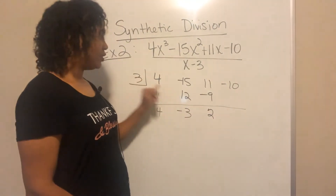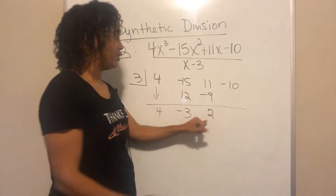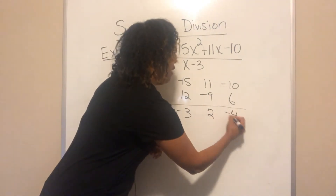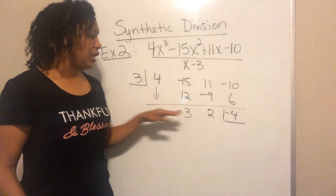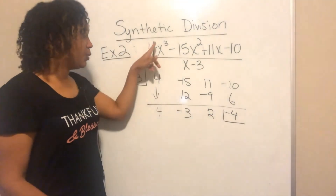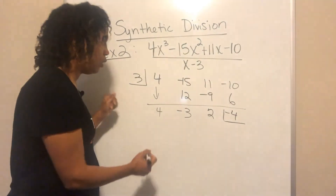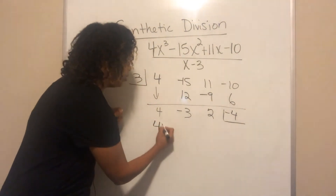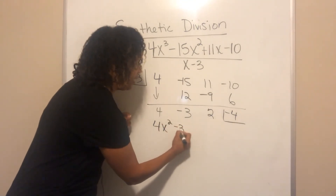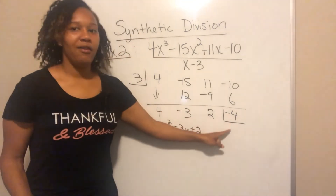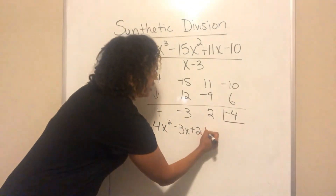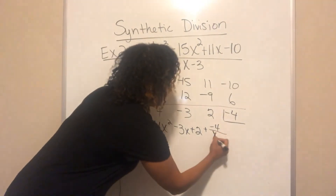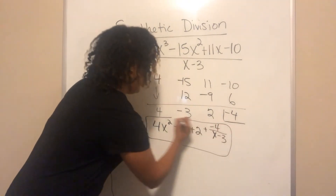3 times 2 is 6. Negative 10 plus 6 is negative 4. This bottom row gives the coefficients of the quotient. We divided a third-degree polynomial, so the quotient is second-degree: 4x² minus 3x plus 2. The remainder is negative 4, so the final answer is 4x² minus 3x plus 2 minus 4 over x minus 3.